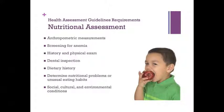Your first step in deciding which screenings are required and which topics to cover during anticipatory guidance should be to perform a nutritional assessment at each health assessment visit. Nutritional assessment includes accurate measurements of length, height, weight, and when appropriate, head circumference, tricep skinfold measurement, and upper arm circumference; laboratory tests to screen for anemia; history and physical exam including dental inspection; dietary history and assessment of food intake and nutrients using a food frequency or dietary assessment tool; and questions to identify nutritional problems such as extended bottle feeding, inappropriate introduction of solid foods, pica behavior, developmental delays in feeding, and social, cultural, and environmental conditions affecting food intake, including availability of fruits and vegetables, special dietary practices, and use of food assistance programs.